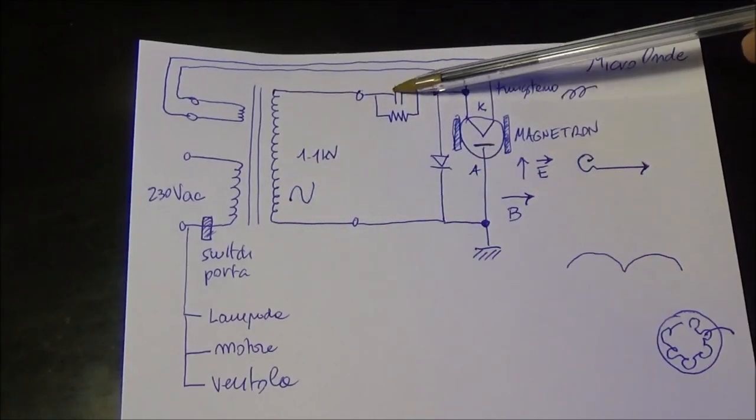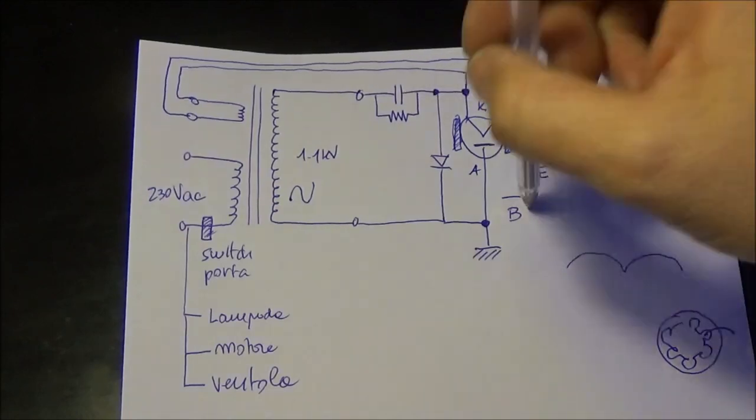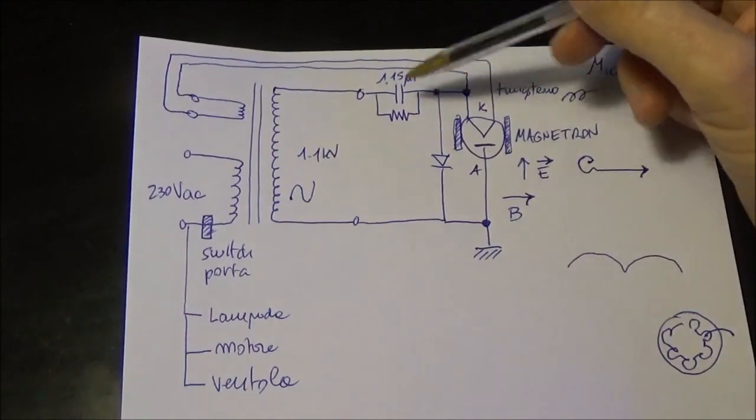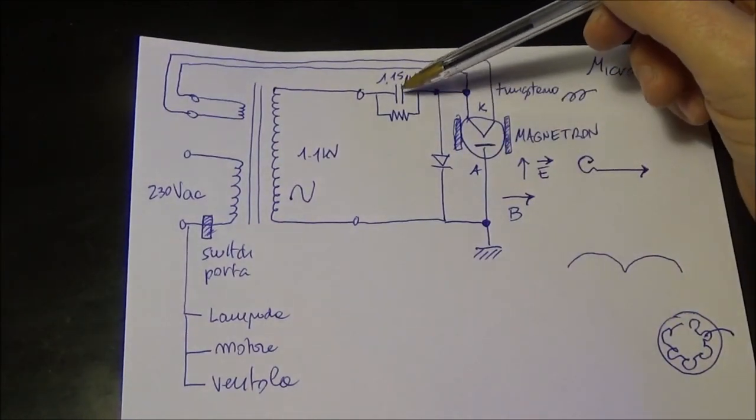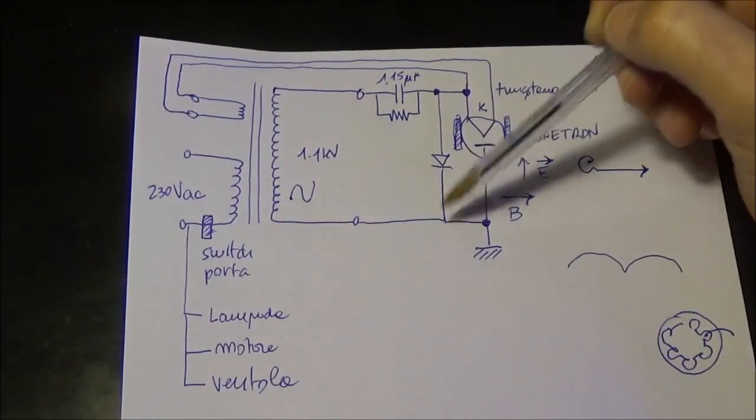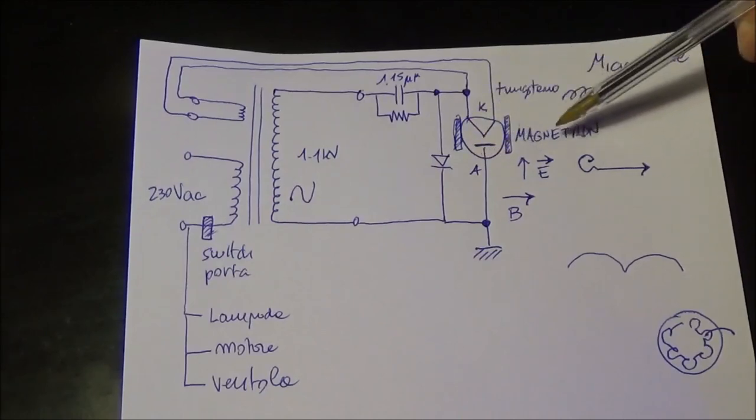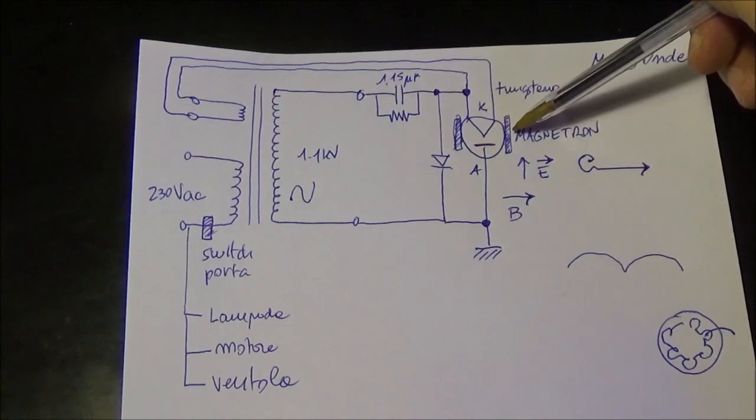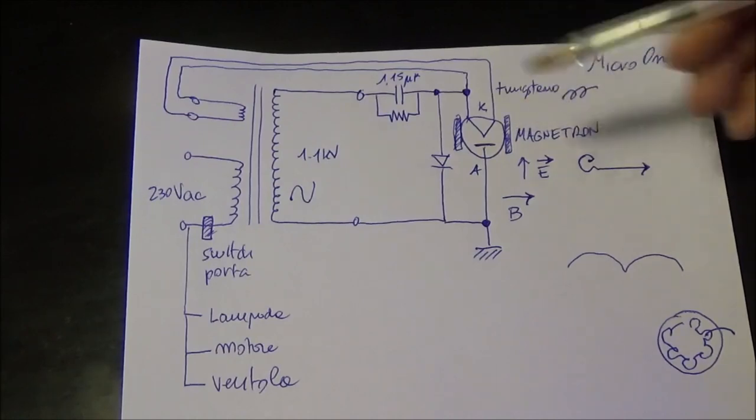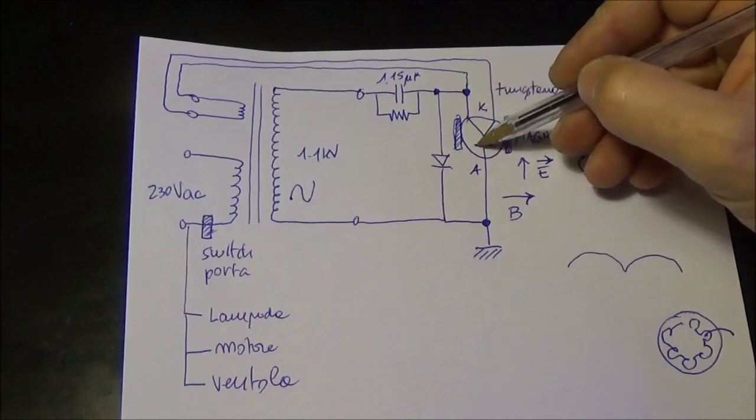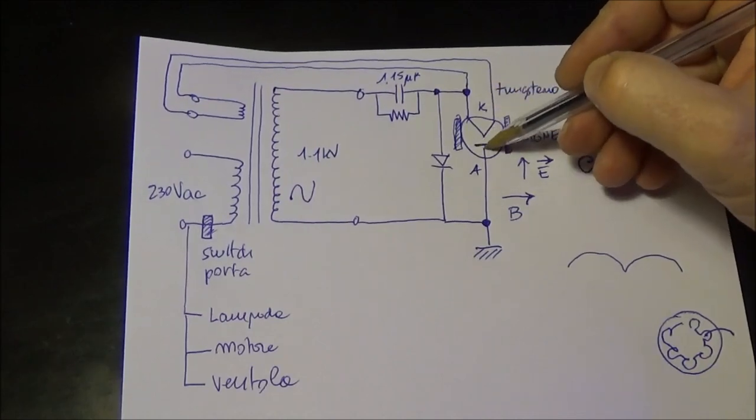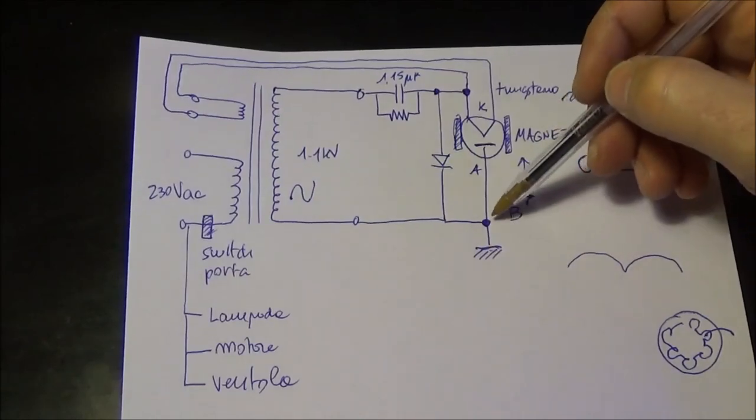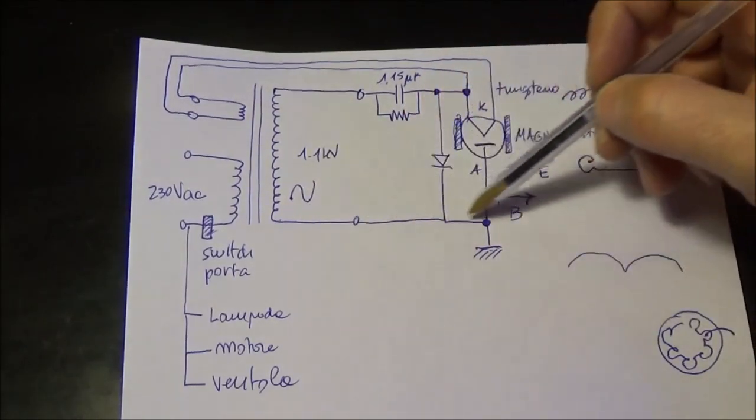Then we have a big capacitor of 15 µF responsible for the doubling of the voltage, and the diode also concurs with the doubling of the voltage. The magnetron is this tube and we have the anode connected to ground, connected to the chassis of the microwave oven and also to the minus of the transformer.